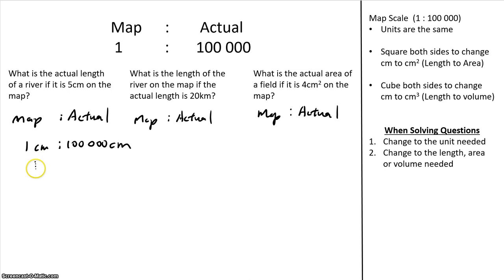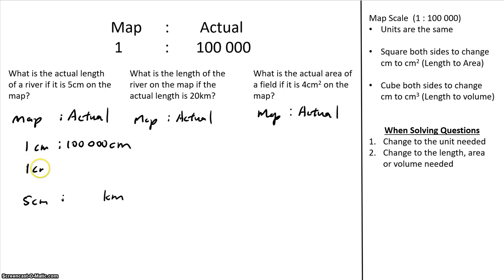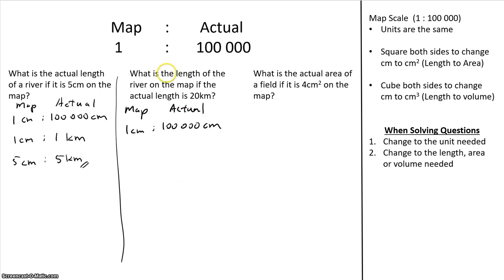Since this is a river, it makes sense to express the answer in kilometers. So the first job is to change 100,000 cm to kilometers: 100,000 cm equals 1 km. Since we want 5 cm, we multiply both sides by 5, giving 5 km. That's the answer.